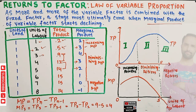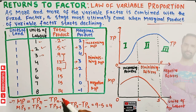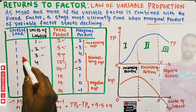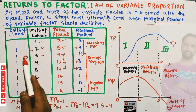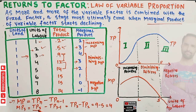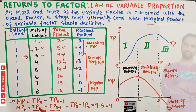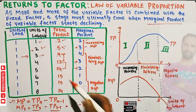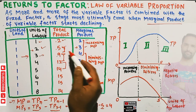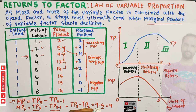Marginal product is calculated as total product at n units minus total product at n minus one unit of the variable factor. For example, marginal product when three units of labor are employed is total product at three units minus total product at two units — that is nine minus five, which gives us four. This is how we calculate marginal product.